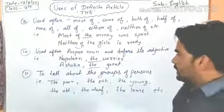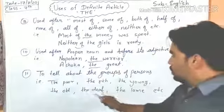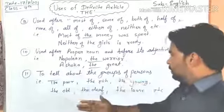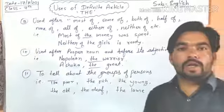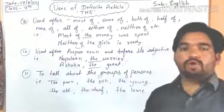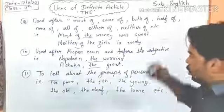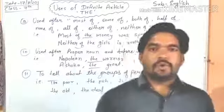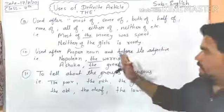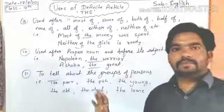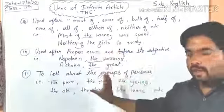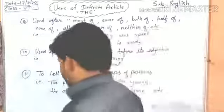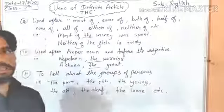The eleventh use: 'the' is used to refer to groups of persons — logo ke kisi vishesh group ko show karne ke liye। For example: 'the poor' — गरीब लोग, 'the rich' — अमीर लोग, 'the young,' 'the old,' 'the deaf,' 'the lame.' So these are the main uses of the definite article 'the.' For your standard, this is enough — exam में इससे ज्यादा नहीं पूछा जाएगा। Please note all points with examples in your fair copy. Okay, bye!